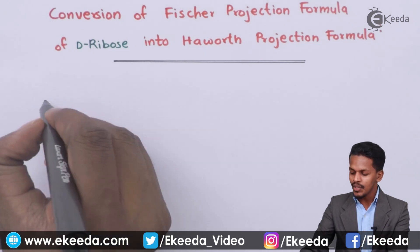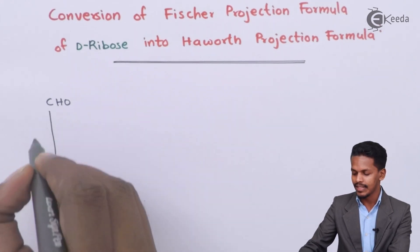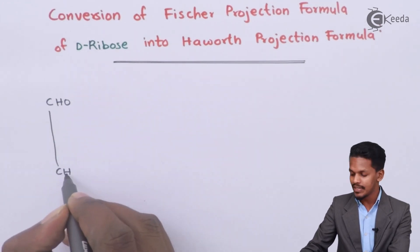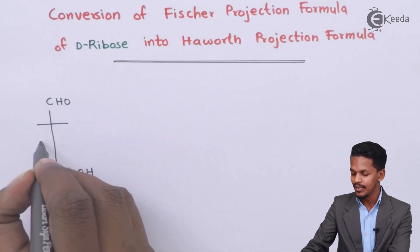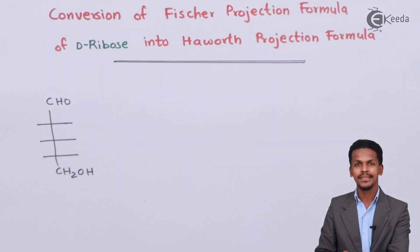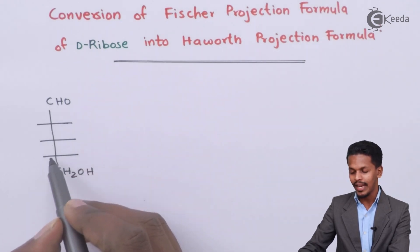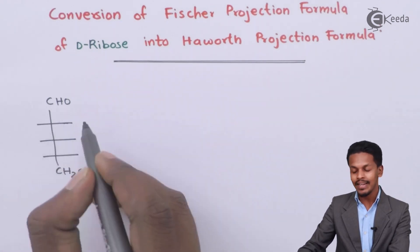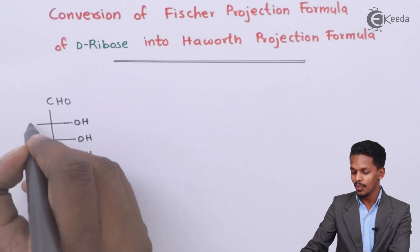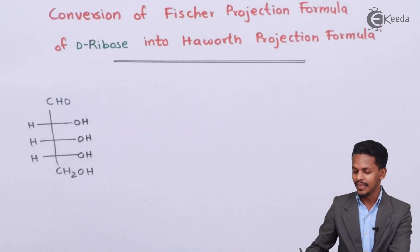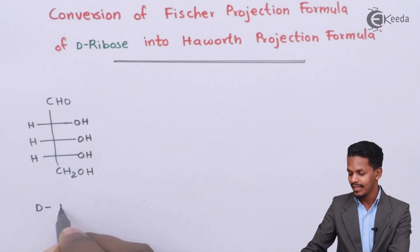Talking about the first carbon atom, the first carbon atom consists of CHO, while the last carbon atom consists of CH2OH, and in between there are 3 carbon atoms — 1, 2, and 3. There are 3 chiral carbon atoms, and on the right hand side there is a presence of OH group on each of them, while on the opposite side there is hydrogen. This is the Fischer projection formula for D-ribose.